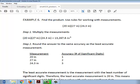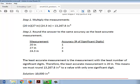The least accurate measurement is the measurement with the least number of significant digits. Which one has the least number of significant digits? Yes, twenty inches. It has only one significant digit.